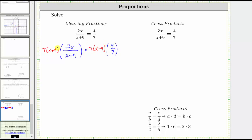If it's helpful, we can write seven times the quantity x plus nine as a fraction with a denominator of one. And now before multiplying, we will simplify out any common factors between the numerators and denominators.